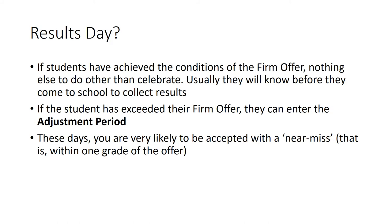So what actually happens on results day? I'm trusting that results day will be Thursday the 18th of August for these students — that's 2022 — but we'll confirm that later on. If students have achieved the conditions of the firm offer there is nothing else for them to do than celebrate. Usually UCAS's track system will change early in the morning between 7 and 8 a.m., so they will probably know before they come into school whether they have made their firm or insurance choice. If the student has exceeded the terms of their firm offer, they can enter something called the adjustment period.